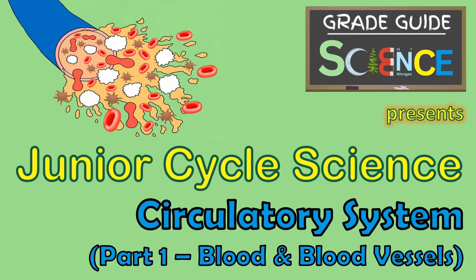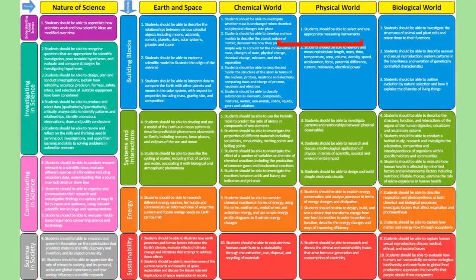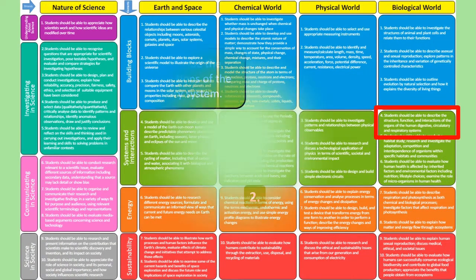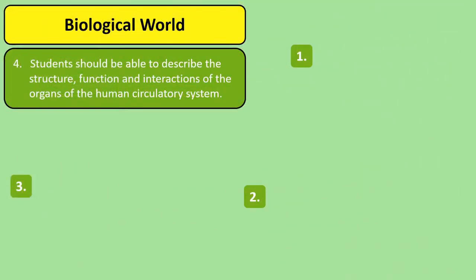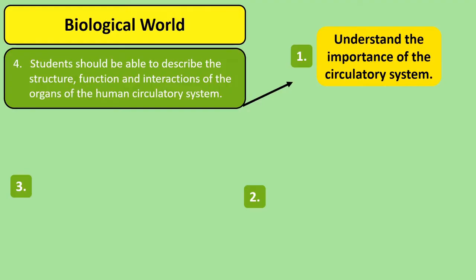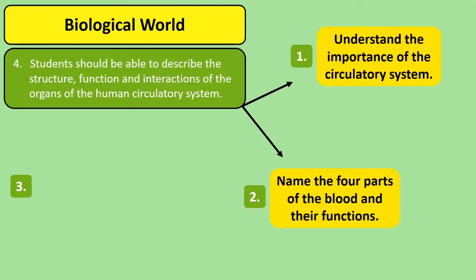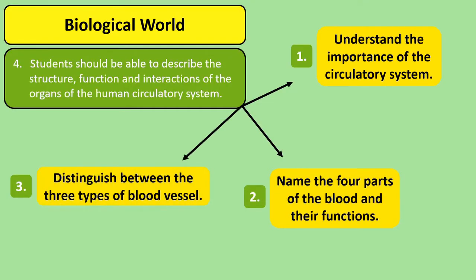Hi and welcome back to GradeGuide. This revision video on the circulatory system is directed towards students completing the junior cycle science exam as part of the Irish curriculum. Based off the NCCA learning outcomes, three points we'll be revising in this video are the importance of our blood in the circulatory system, the components of blood and what each of them do, and the three main types of blood vessel and the differences between them.